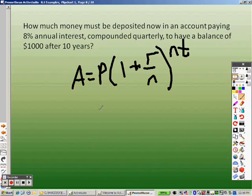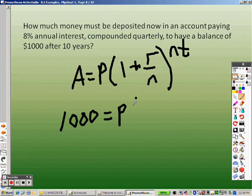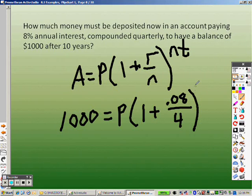It says, how much money must be deposited now in an account paying 8% compounded quarterly would have a balance of 1,000 after 10 years. So, the balance is going to be 1,000. That's going to be 1,000. I don't know what P is. I know what 1 is, because it's just a 1. R is the rate, so that's .08. Compounded quarterly means 4 times a year. To the 4th times 10 years.